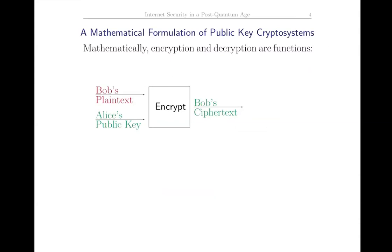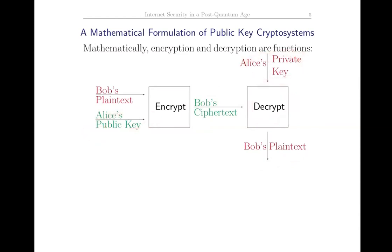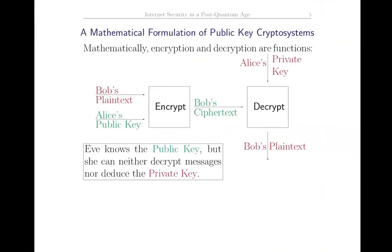Let's formulate this mathematically. Encryption and decryption are functions. There's an encryption function represented by a black box. The input is Bob's plaintext and Alice's public key; the output is Bob's ciphertext. Alice then feeds her private key into the decryption function, and out comes Bob's plaintext. But in order for the decryption function to work, you need the private key that pairs with the public key. Eve knows the public key but not the private key, so she can't decrypt.